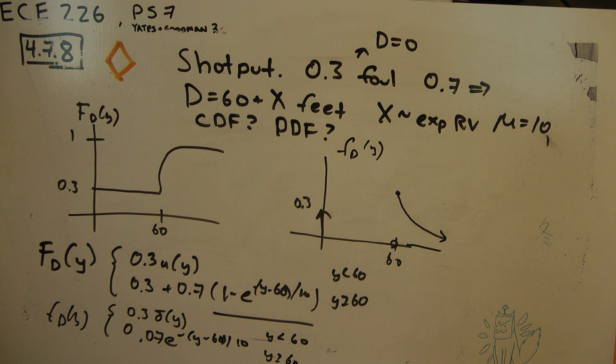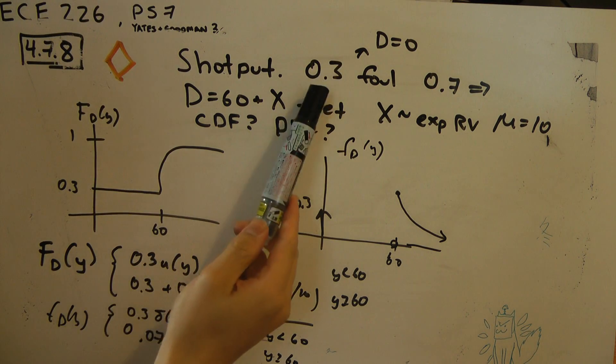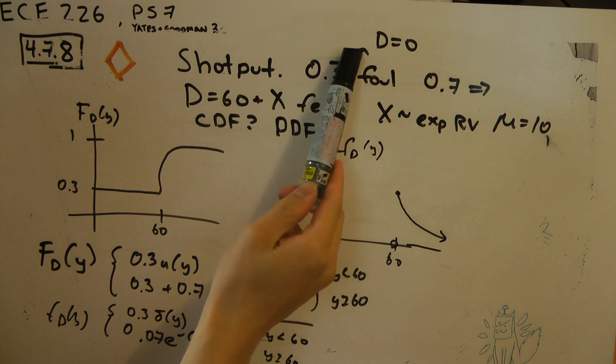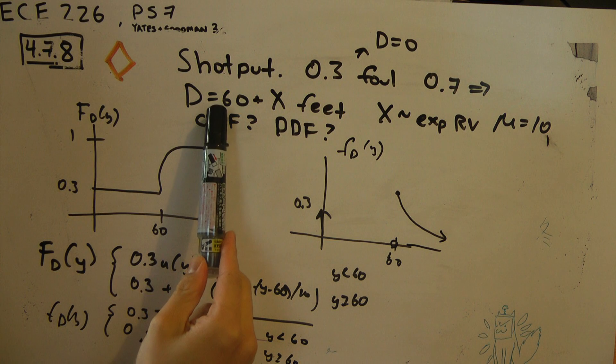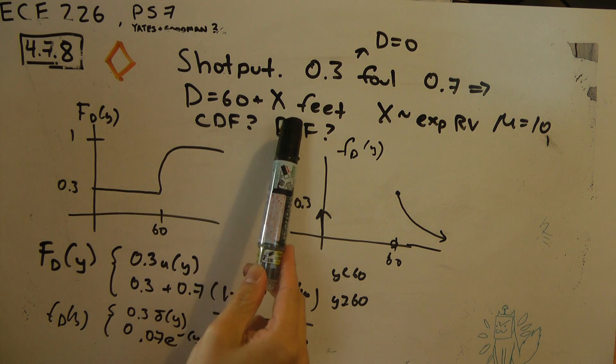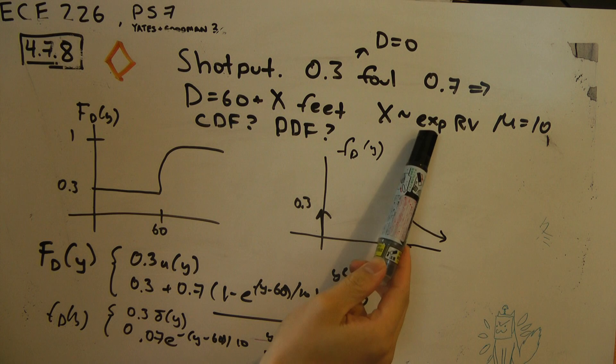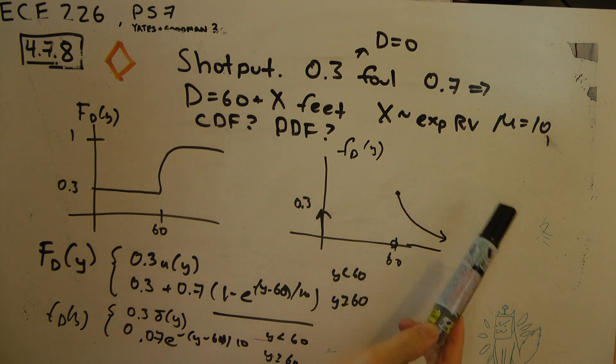In this problem we're looking at shot put. There's a 0.3% chance that you'll foul and the distance is 0. Otherwise you have a distance of 60 feet plus X where X is an exponential random variable with a mean of 10.